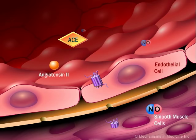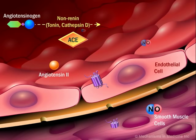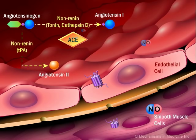In addition, alternative pathways exist that do not rely on either renin or ACE. In non-renin pathways, enzymes like tonin and cathepsin-D release angiotensin-1 from angiotensinogen, and tissue plasminogen activator, or TPA, can make angiotensin-2 directly from angiotensinogen, bypassing the midway production of angiotensin-1. Enzymes like chymase can form angiotensin-2 from angiotensin-1 via an ACE-independent pathway.